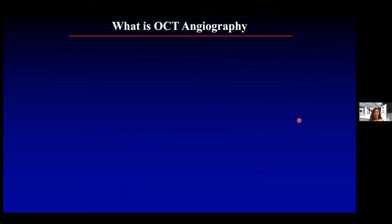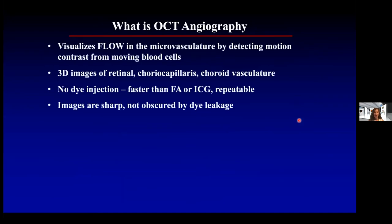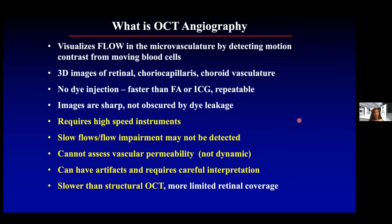Just one slide on the basics. What is OCT angiography? OCT angiography is a novel imaging modality to visualize flow in the microvasculature by detecting motion contrast from moving blood cells. It provides three-dimensional images of the retina, choriocapillaris, and choroidal vasculature. There's no dye injection, so it's faster than dye-based fluorescein or ICG angiography, and it's repeatable at every patient visit. Images are sharp and not obscured by dye. On the con side, it does require high-speed instruments, and sometimes very slow flow or flow impairment may not be detected. It does not assess dynamic vascular permeability, and there can be artifacts related to OCT-A imaging, so images may require careful interpretation.